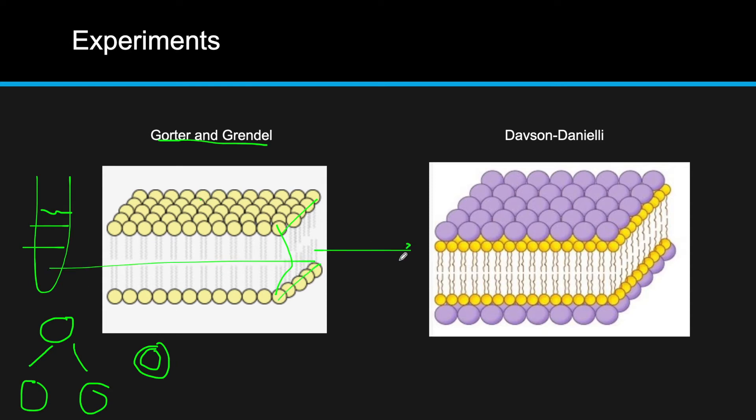Later, as time went on, they realized they found tons of proteins, and they knew that they didn't come from inside the cell because they didn't match any of the proteins that the cell has. So where can they come from? Davson and Danielli came along and said they come and sandwich this phospholipid bilayer. So you have this sandwich model of proteins on top, proteins on the bottom, and a phospholipid bilayer in the middle.